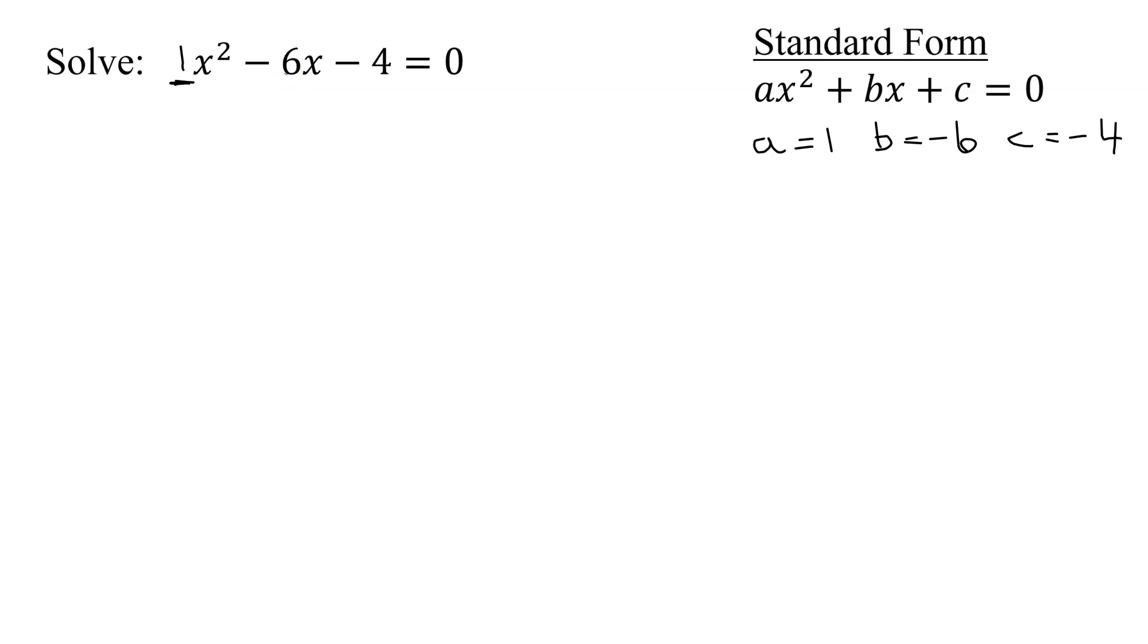So we're going to have to use the quadratic formula. And you should all have that memorized. And it is x equals negative b plus or minus the square root of b squared minus 4ac. That is all under the radical, all divided by 2a.